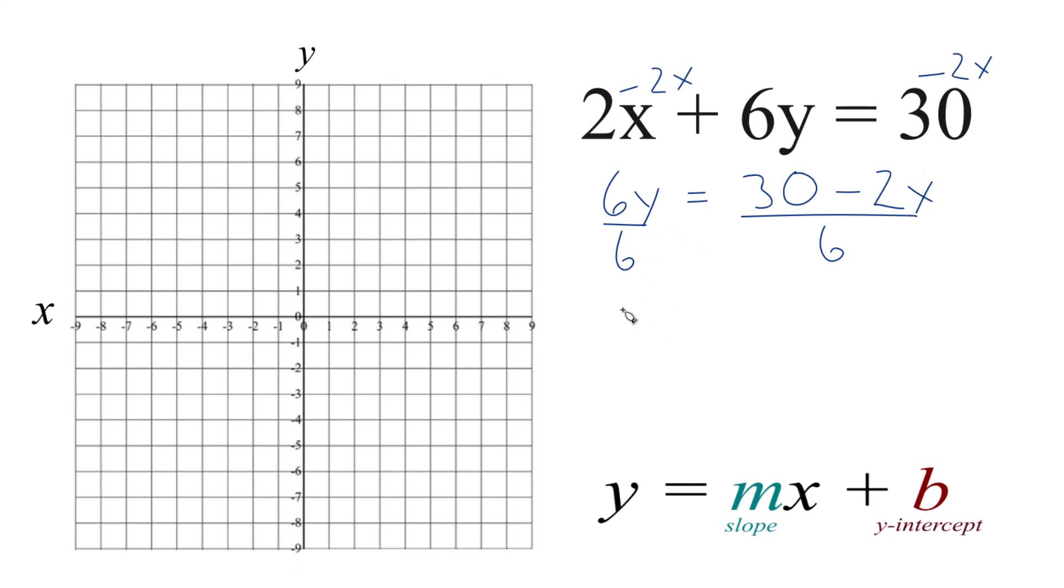So 6 divided by 6, we just end up with y equals 30 divided by 6 is 5. And then minus 2 over 6, we could reduce this to minus 1 third x. Then let's put this first.